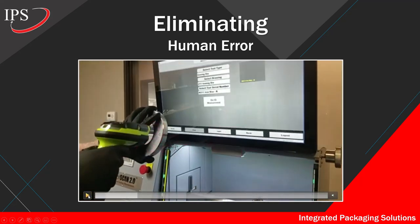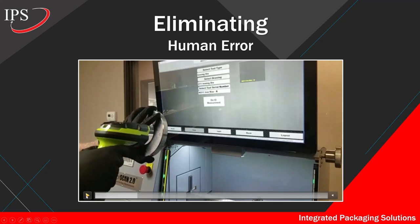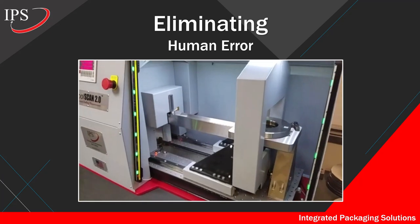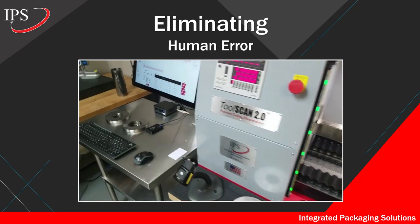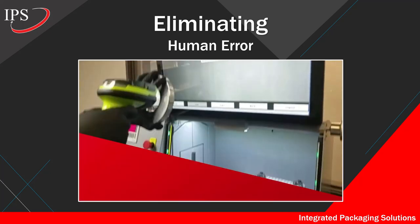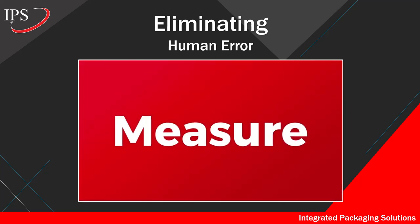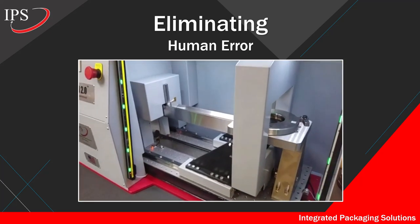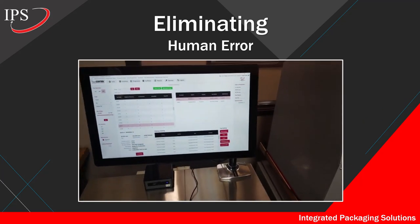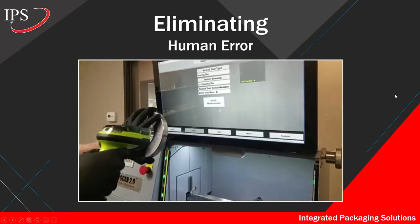It all starts with a scan. We have 2D data matrix barcodes on your tooling, and the ToolScan system that measures your tooling is able to pick up the serial number from that barcode. You place the tool into the ToolScan 2.0 and measure it. The measurement that comes out with five or six significant figures is automatically sent to the Tool Control digital database — eliminating writing on a Sharpie on that tool for your primary measurement.